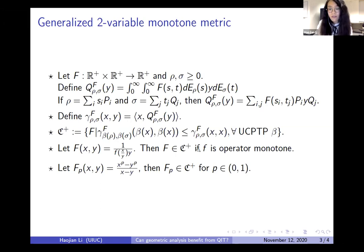We define a set C plus of two-variable functions such that the associated metric is monotone decreasing under any unital quantum channels. For example, capital F_p for any p in zero and one is in C plus but not induced from operator monotone functions.